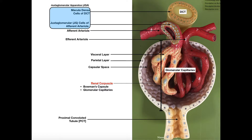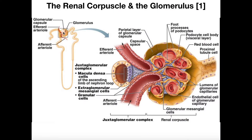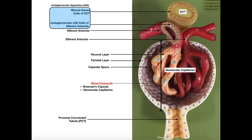You should also notice that the afferent arteriole has specialized cells that actually detect the degree of stretch of the afferent arteriole itself. These are called juxtaglomerular cells, or JG cells — sometimes even called granular cells. We're going to talk about these much later when we discuss the juxtaglomerular apparatus. Also notice that the distal convoluted tubule actually loops around and goes right past the renal corpuscle. The cells that line the distal convoluted tubule in this region are called macula densa cells, and that is again part of what we call the juxtaglomerular apparatus, which we'll discuss in a separate video.